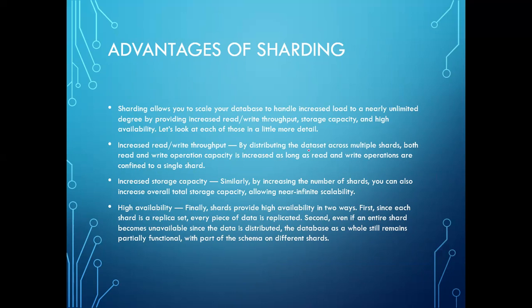Increased read/write throughput: by distributing the data set across multiple shards, both read and write operation capacity increases. Reading means taking data from the database; writing means inserting, updating, or modifying data. If each shard has a smaller amount of data, read and write operations are easier. For example, if you have 1 lakh records as a whole, you search the entire database. But if divided into shards with only 1000 records each, you only need to read and update from those 1000 records — much easier.